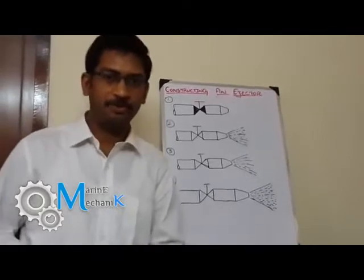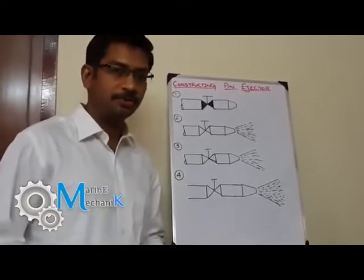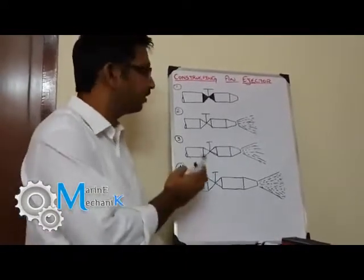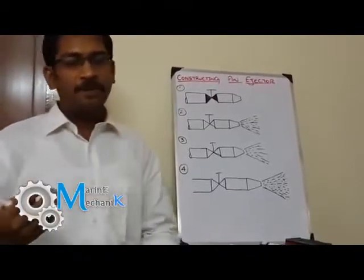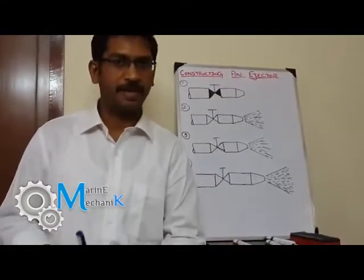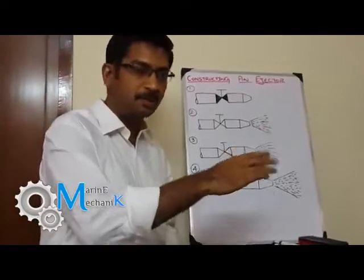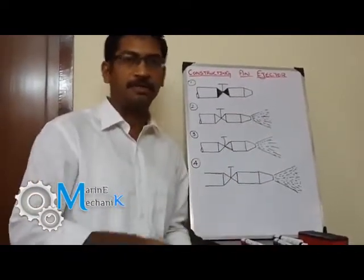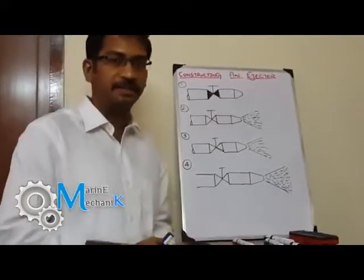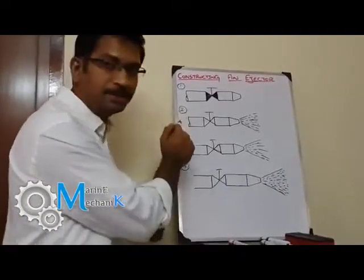Welcome you all once again to Marine Mechanic videos. And the topic for the day is ejector. Before proceeding to the working of an ejector, we will understand what is an ejector and a simple construction of an ejector. In my previous videos, one of my videos I have explained the concept of air lift or the lift mechanism by showing a simple experiment with a paper, blowing air on top of it so that the paper lifts. I will post the link over here, just click it and recollect the concepts. With that concept in mind, we will proceed constructing an ejector. So there are four simple steps which I have put over here. Let's start with step number one.